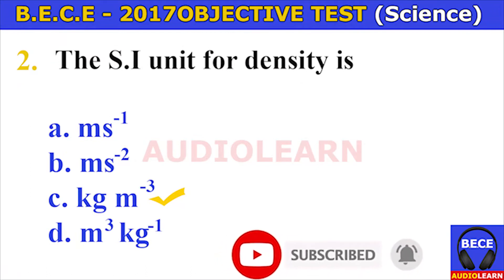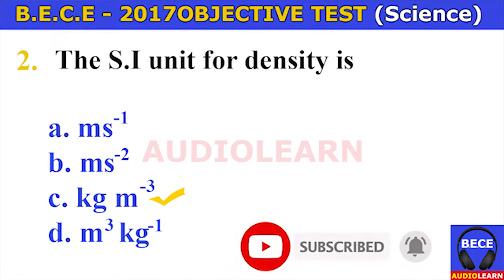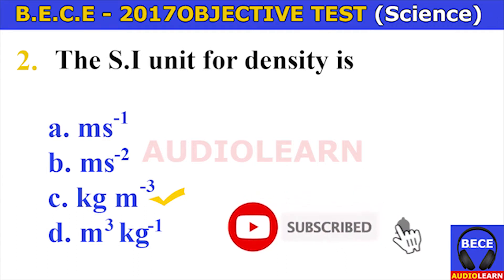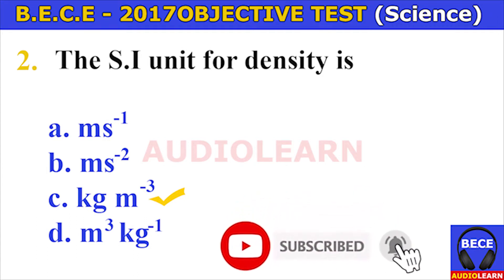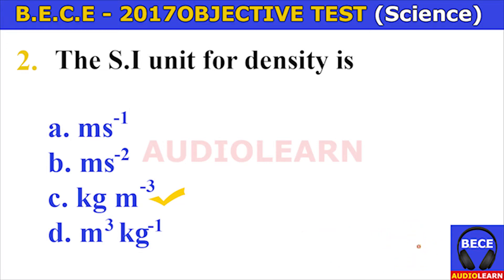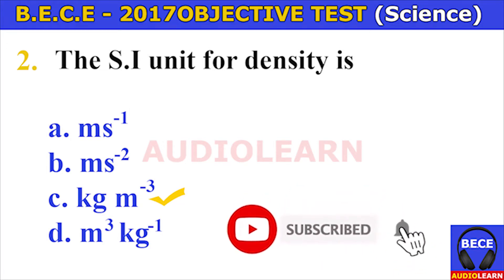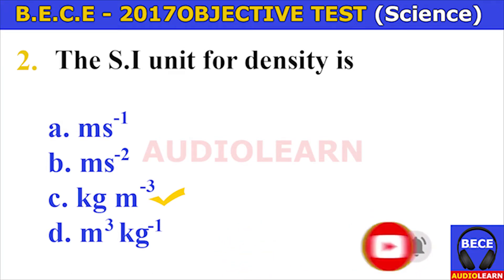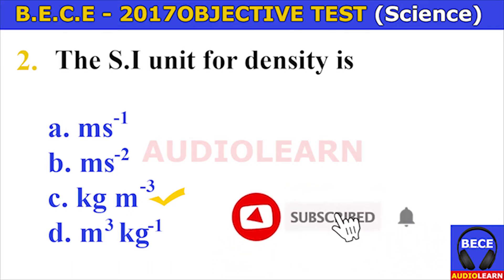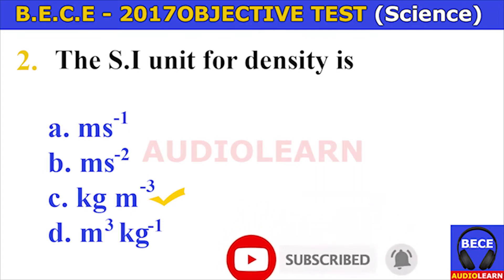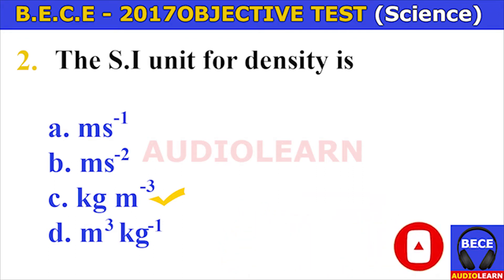Number two. The SI unit for density is A. ms raised to power negative 1, B. ms raised to power negative 2, C. kgm raised to power negative 3, D. m cubed kg raised to power negative 1. The answer is C. kgm raised to power negative 3. That is the SI unit for density.